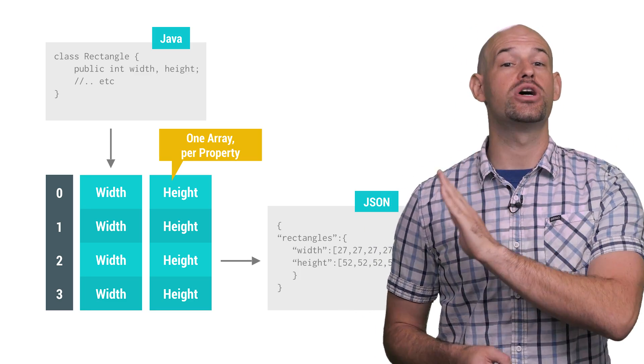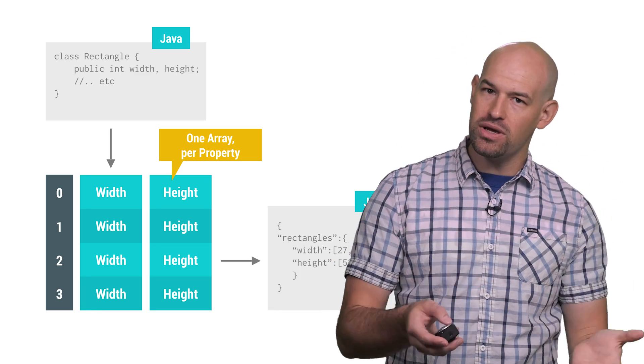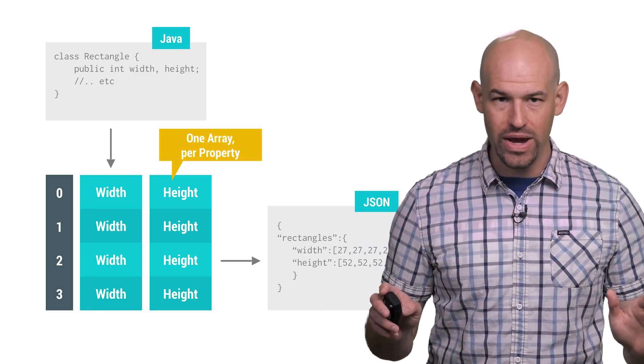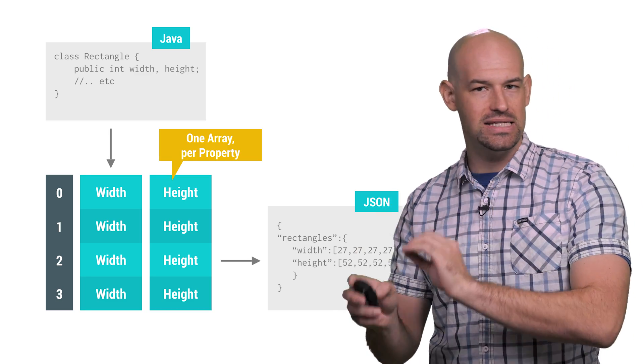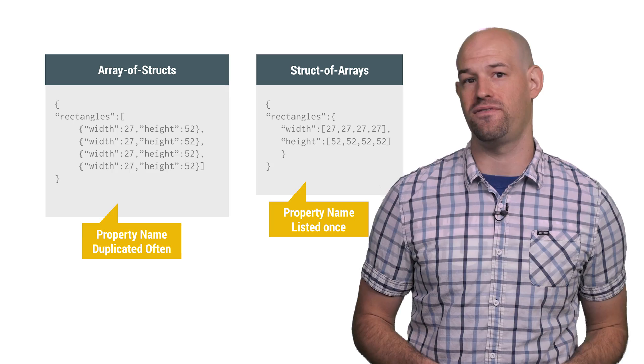For example, make an array for just the width values and a separate array for the height values. The serialized result of this produces simple arrays of similar typed data, and when it comes to serialization, this format has some immediate benefits.